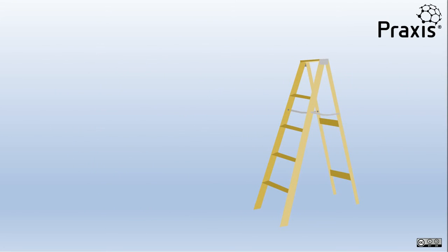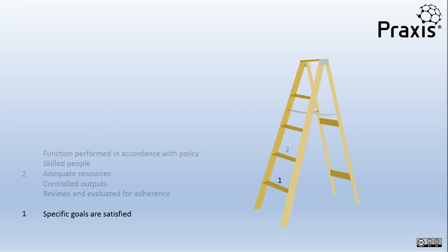Let's take a quick look at the characteristics of the different CMMI levels. At level 1 the organisation achieves the specific goals set for the functional process. On the Praxis website each page starts with a set of goals that must be achieved to reach level 1. If you don't achieve them you're at level 0. At level 1 the goals may have been achieved in an ad hoc way, but at level 2 you will be achieving them in a structured, more repeatable way.